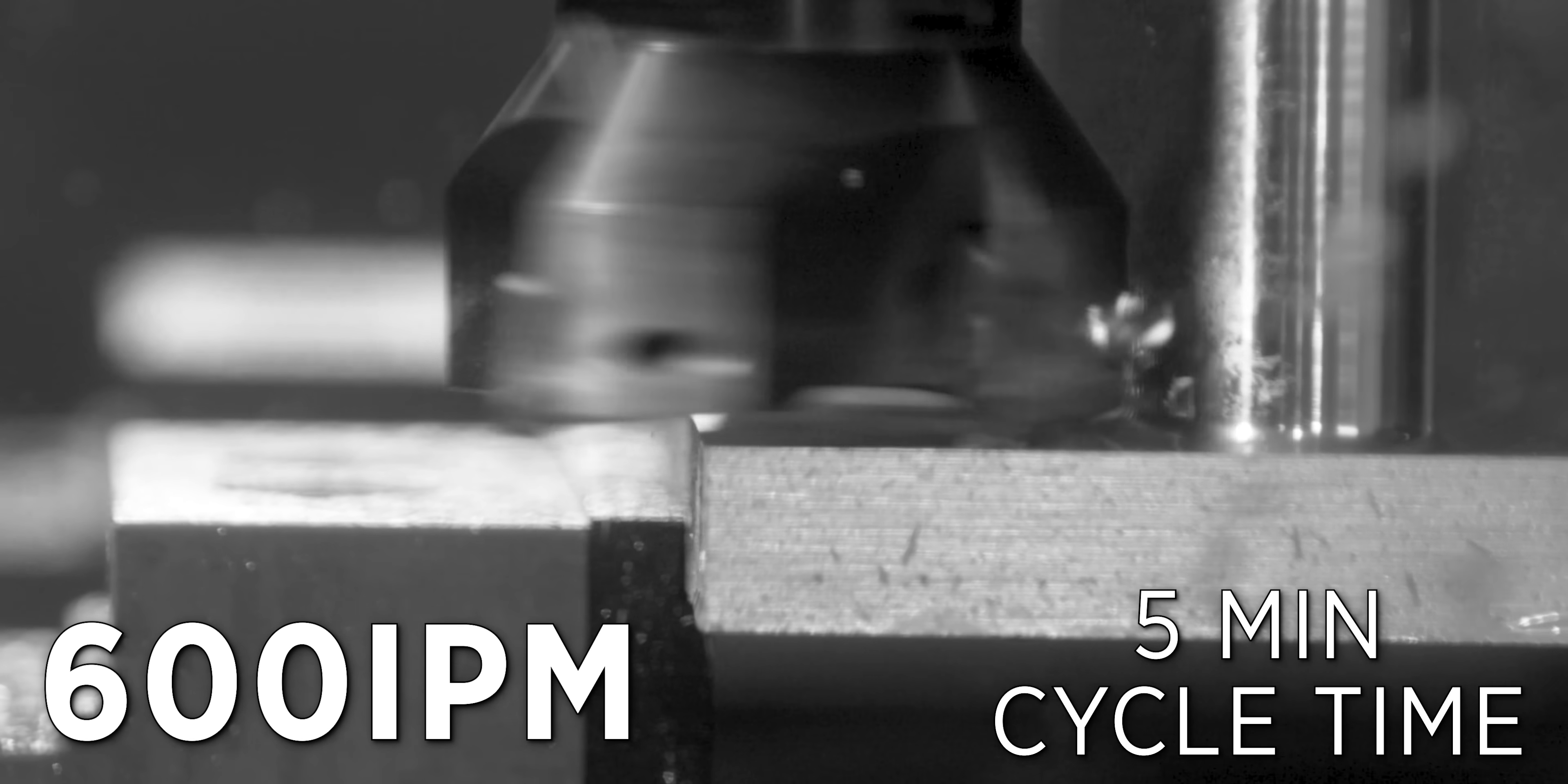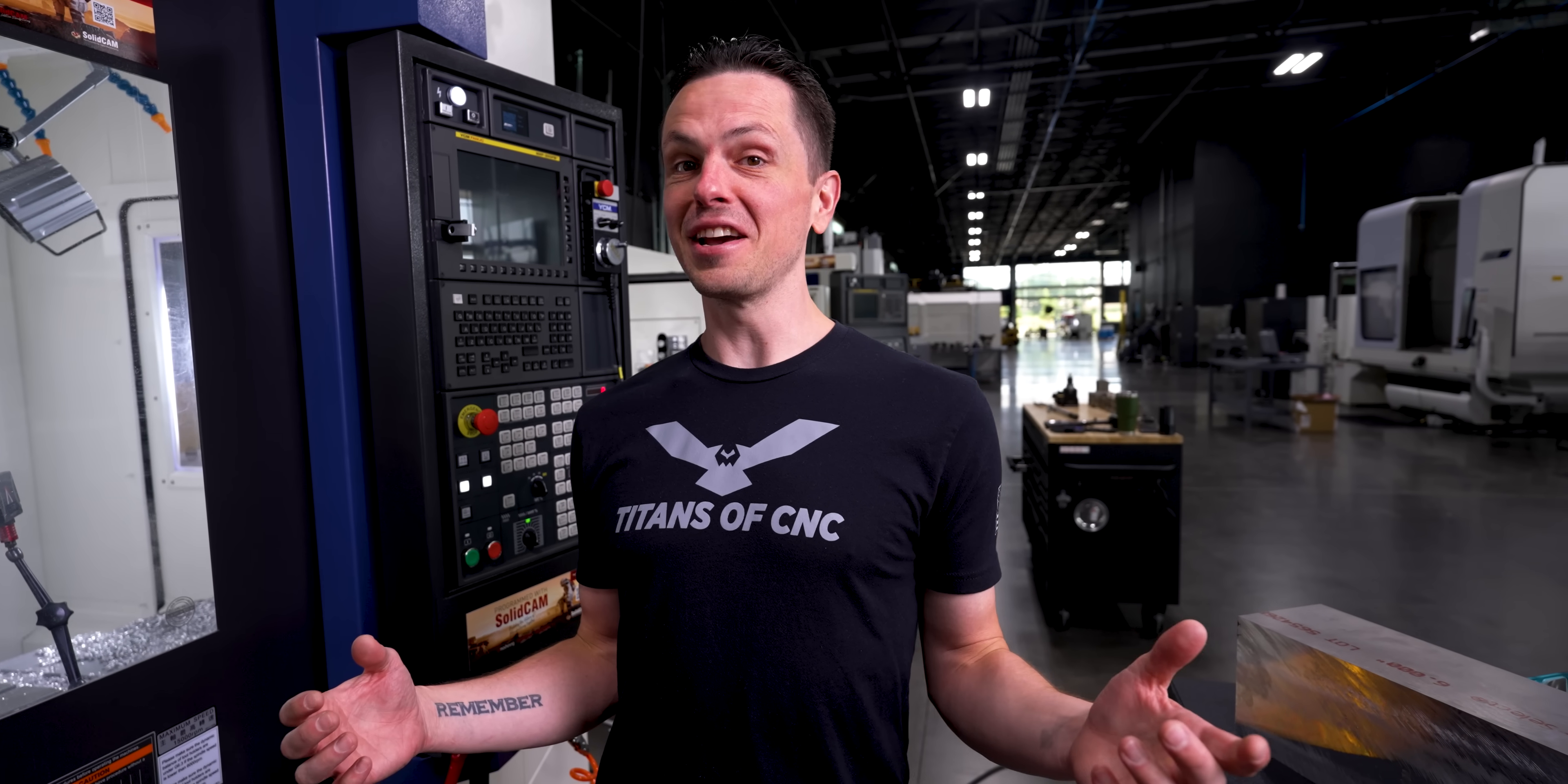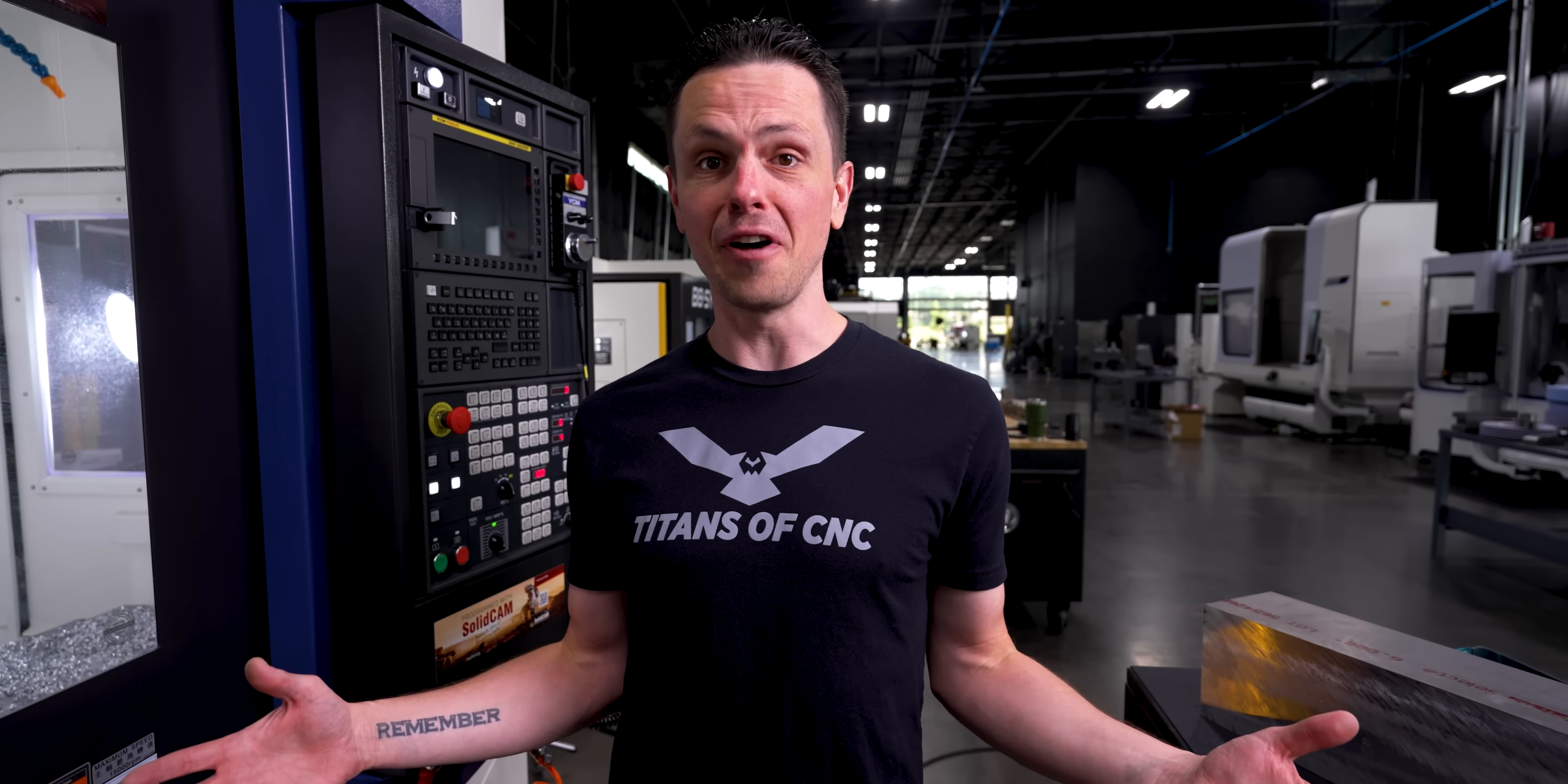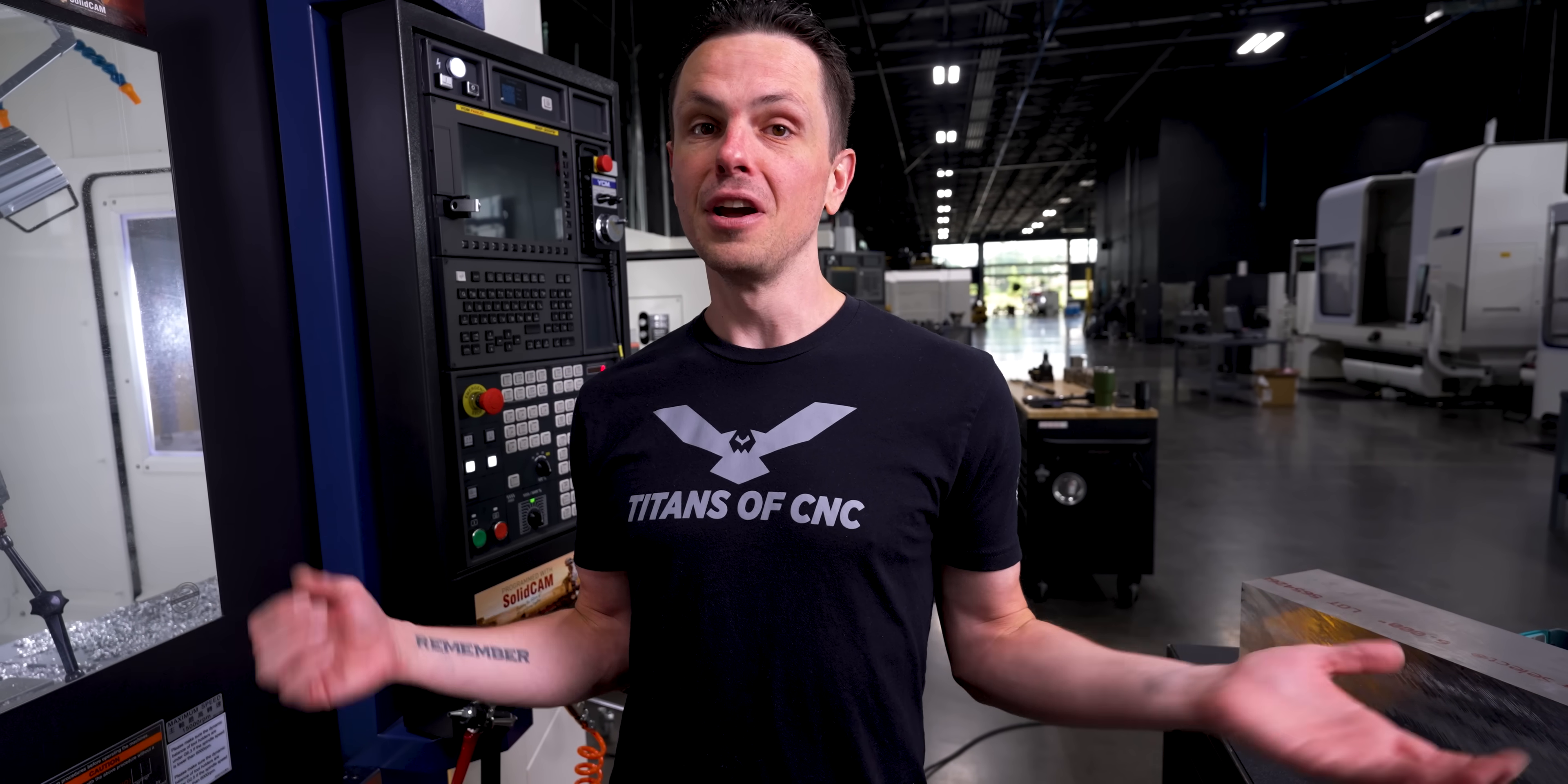At 600 inches a minute, our roughing cycle is only going to take five minutes. That was nuts. We got this thing up to 720 inches a minute and it handled it totally fine. Now we've got to get onto some full slotting and then we're going to rough out the tapers on the top of our part. Let's get to it.